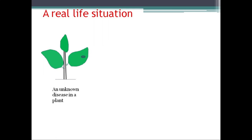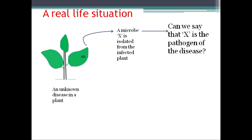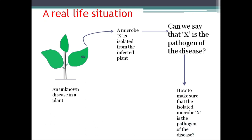To illustrate the usefulness of Koch's Postulates in plant pathology, suppose there is an unknown disease in a plant, identified through its symptoms. A microbe X is isolated from the infected plant. Can we say that X is the pathogen of the disease? One can easily assume that X is the pathogen, but how do we make sure? We have to prove Koch's Postulates and establish the fact scientifically.